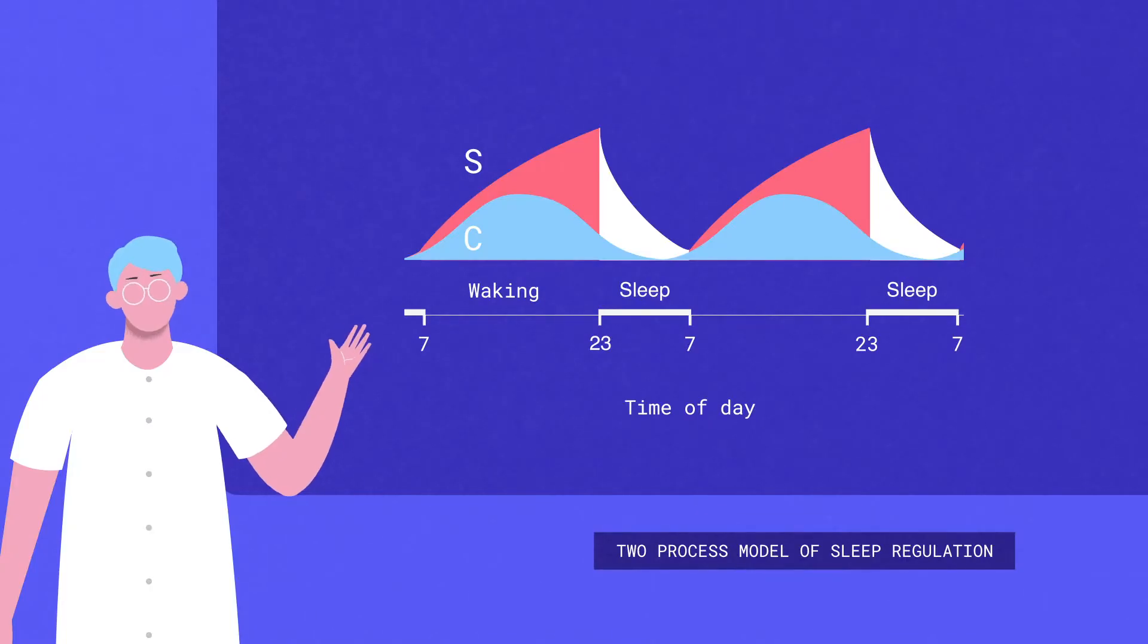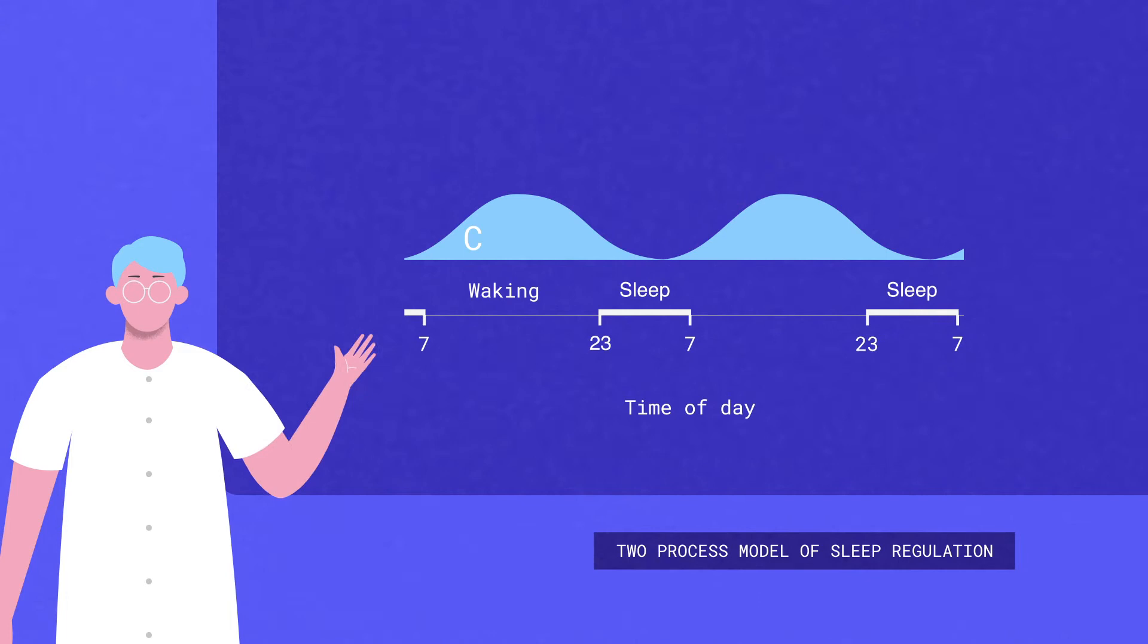So process S explains sleep pressure, but how does our body know to sleep at night? The second process, process C, is responsible for the timing of sleep.